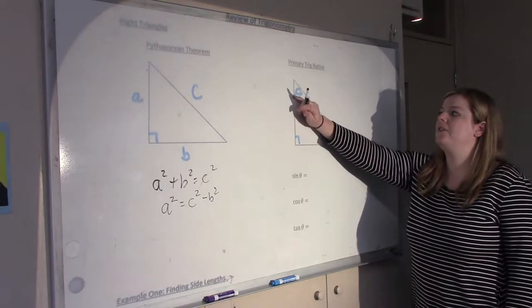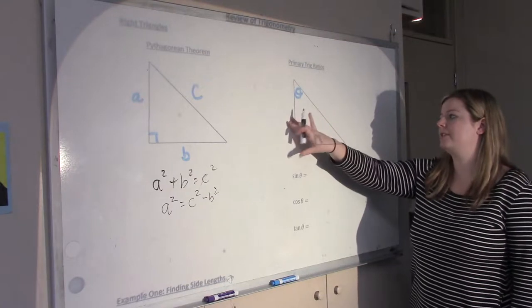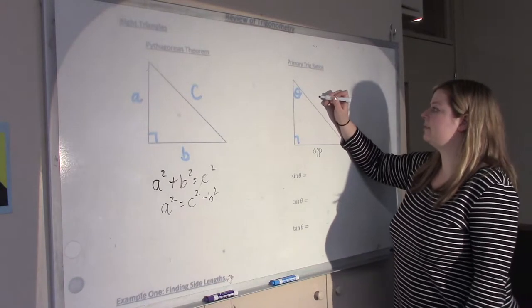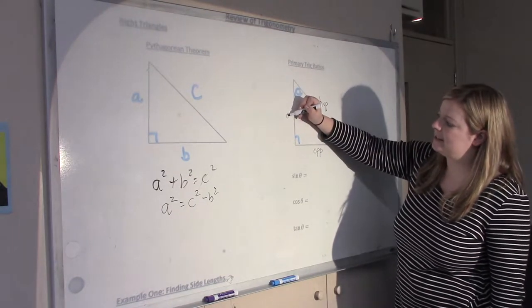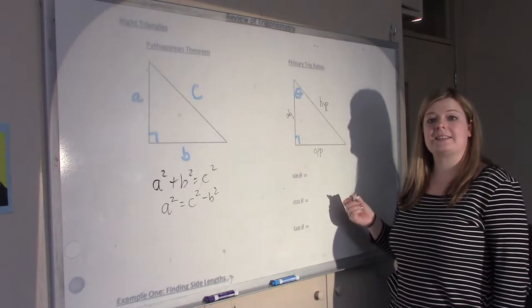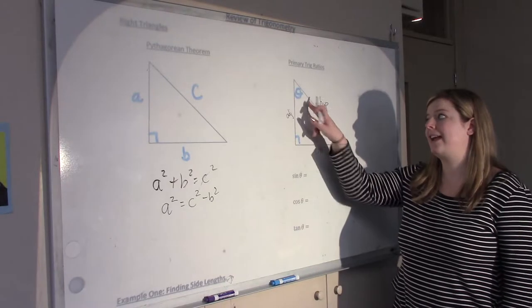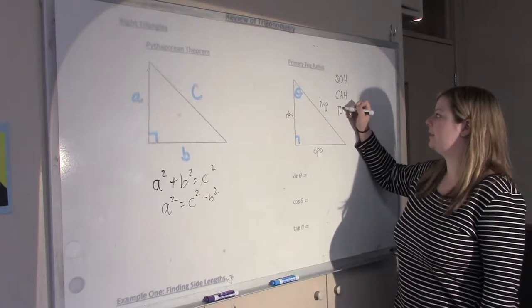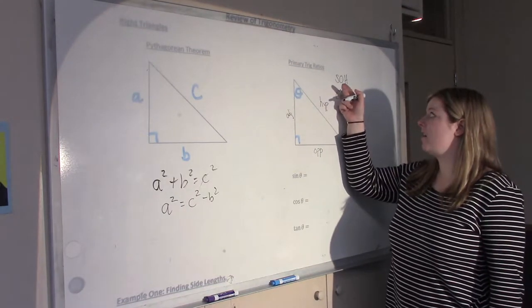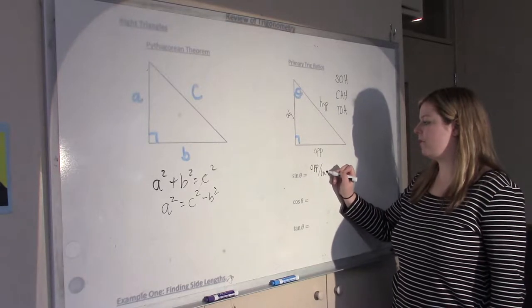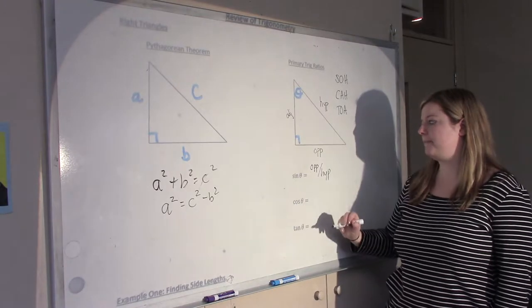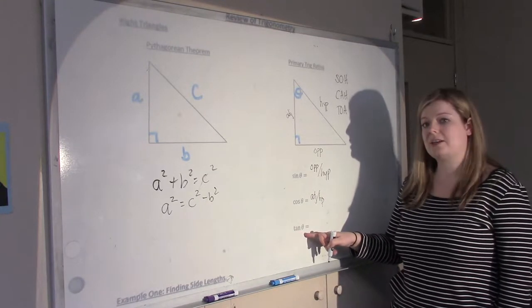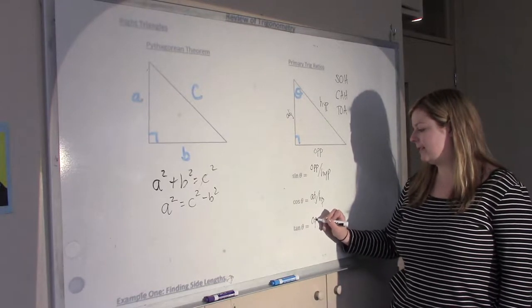Now, for the primary trig ratios, if you have an angle theta, the first thing you should do is label the sides as opposite. So opposite is if you go directly across from theta, that's the opposite angle. And then the hypotenuse is the longest side. And then adjacent is the third one. Now, the word adjacent means next to, so it's the one next to the angle theta that isn't the hypotenuse. Then if you remember the acronym SOHCAHTOA, that means that sine is opposite over hypotenuse. The cosine ratio for theta is adjacent over hypotenuse. And the tangent, or the tan ratio for theta, is opposite over adjacent.